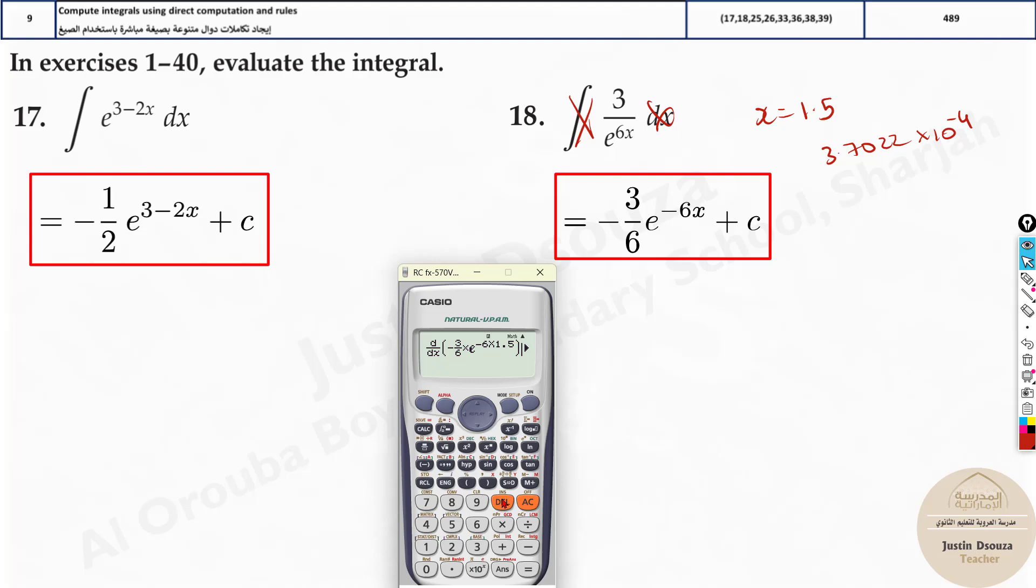Now I'll just show you a simple change. This is the correct answer, but if I just say minus over here or anything, it will give me an entirely different answer. It can never be the same. So this is how we can easily eliminate the other options and get the correct answer.